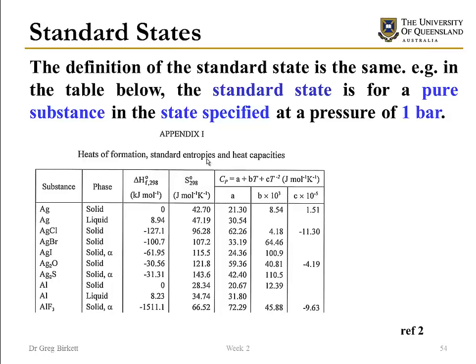Now the difference here between enthalpy and entropy is that enthalpy it's a heat of formation. For entropy it's an absolute value of entropy at the standard state. And our definition of standard state still applies. We still have to specify the pressure, the state, and the purity or the concentration. Okay so in this table here we've got a pure substance, it's in the phase specified, and it's at a pressure of one bar.